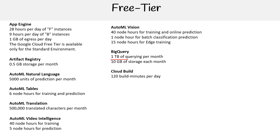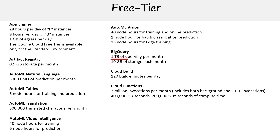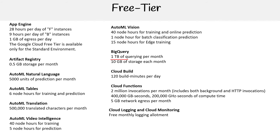For Cloud Build, you get 120 build minutes per day. For Cloud Functions, you get 2 million invocations per month, which includes both background and HTTP invocations, 400,000 gigabyte-seconds, 200,000 GHz-seconds of compute time, and five gigabytes of network egress per month. For Cloud Logging and Cloud Monitoring, you get a free monthly logging allotment and a free monthly metrics allotment.